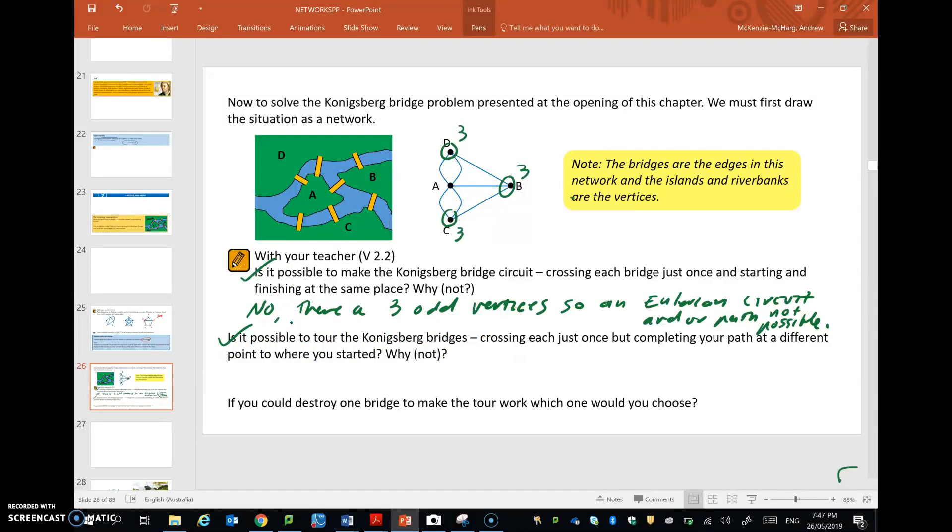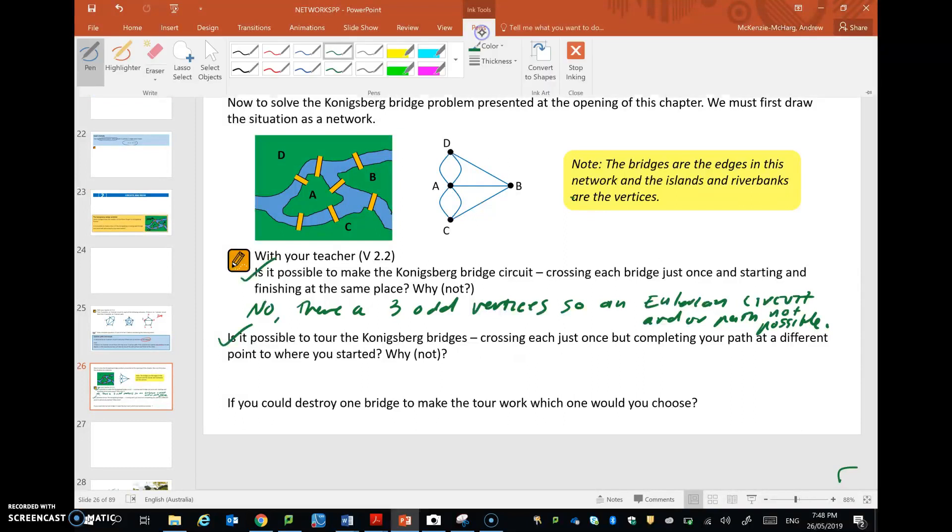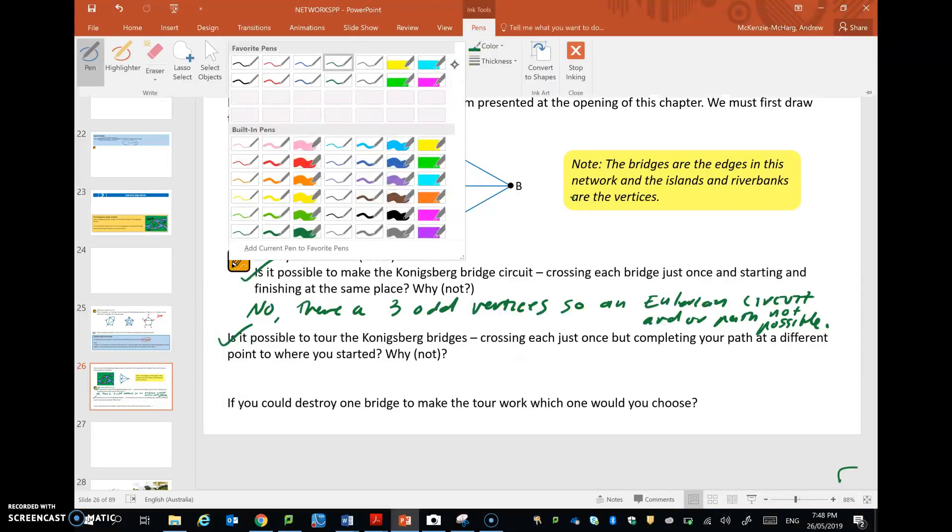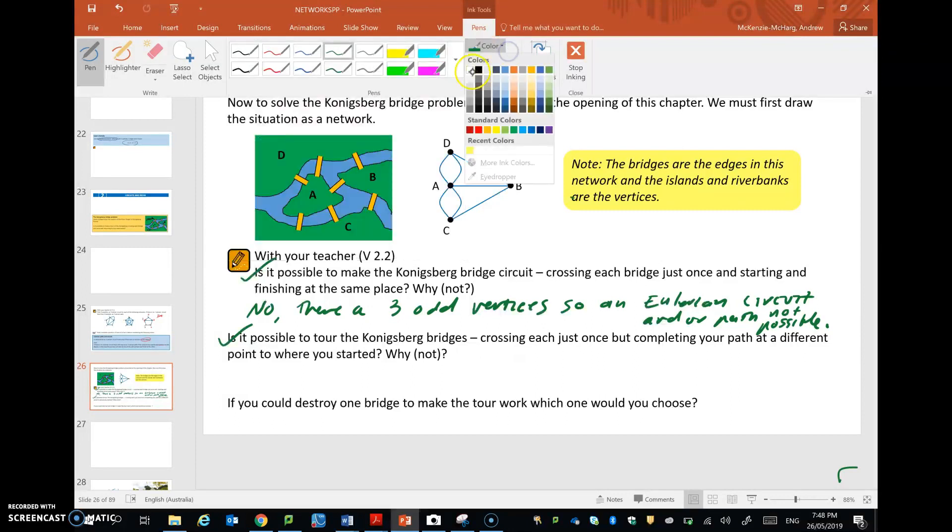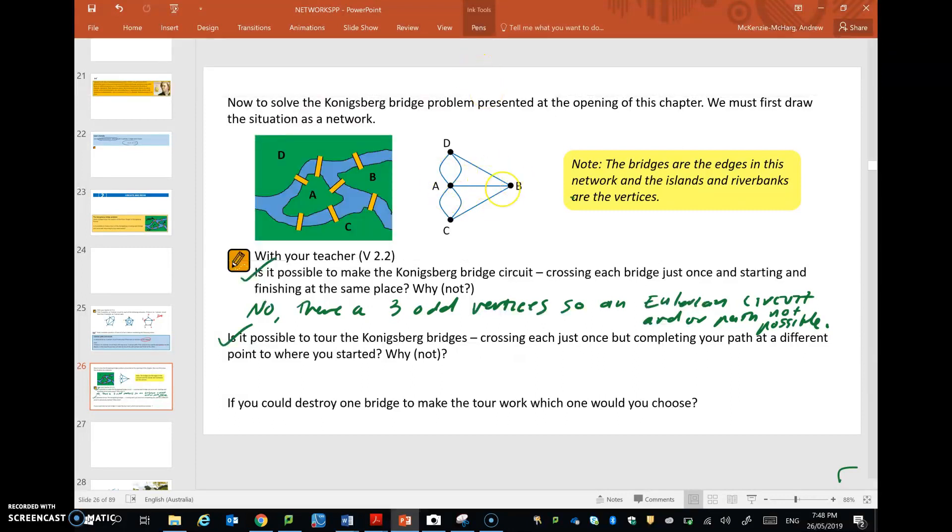If you could destroy one bridge, which one would you choose? Okay, to make the tour work. So that means that we want to make it so that there are two odd vertices. Then we could do an Eulerian path. We're never going to be able to destroy one bridge and just get an Eulerian circuit happening, but we could destroy a bridge and get an Eulerian path. So let's see. I'll go to white so I can wipe out an edge.